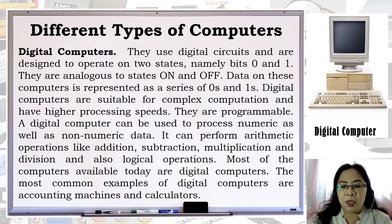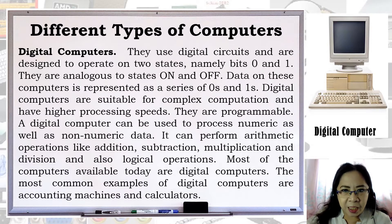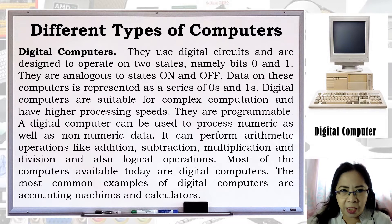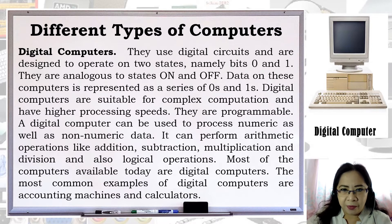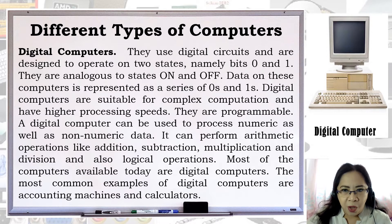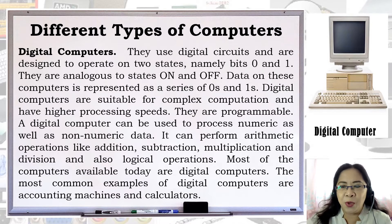The most common examples of digital computers are accounting machines and calculators. The results of digital computers are more accurate than those of analog computers. Analog computers are faster than digital. Analog computers lack memory whereas digital computers store information. We can say that digital computers count and analog computers measure.